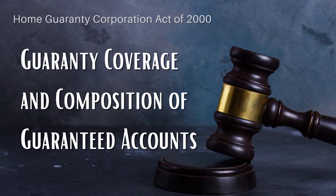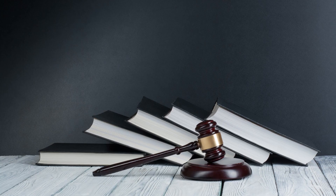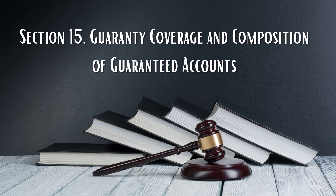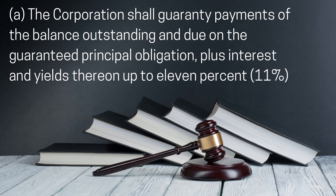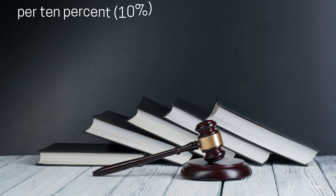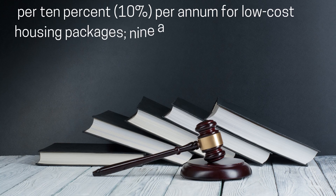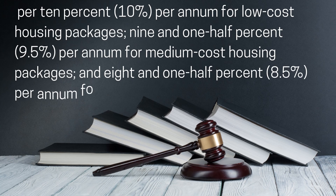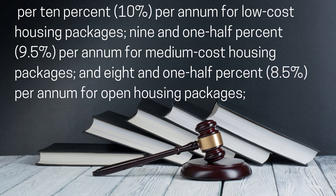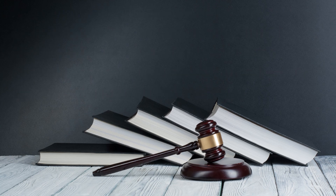Section 15. Guarantee Coverage and Composition of Guaranteed Accounts. A. The corporation shall guarantee payments of the balance outstanding and due on the guaranteed principal obligation, plus interest and yields thereon up to 11% per annum for low-cost housing packages, 9.5% per annum for medium-cost housing packages, and 8.5% per annum for open housing packages.